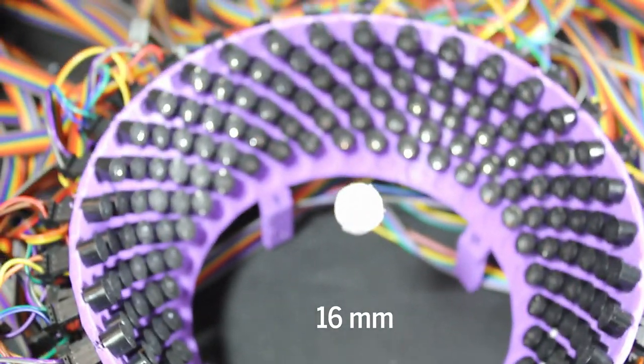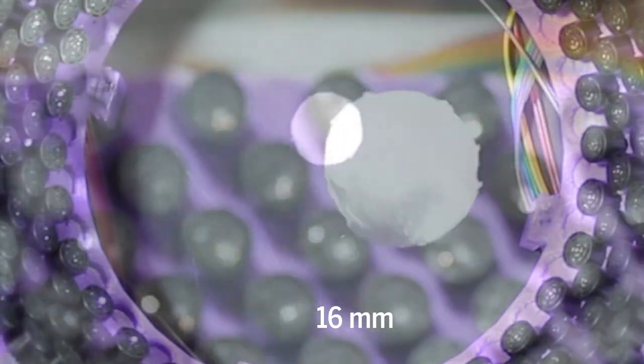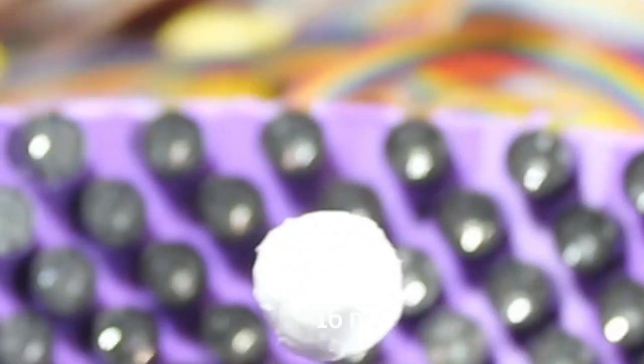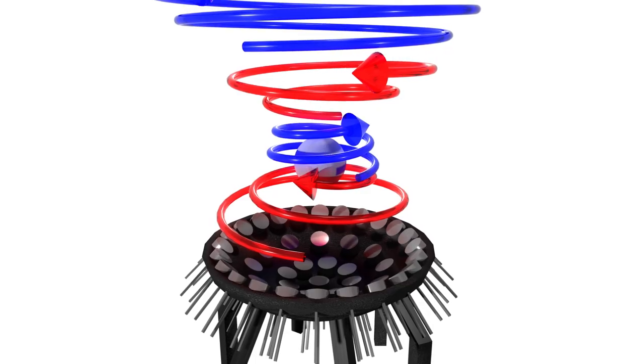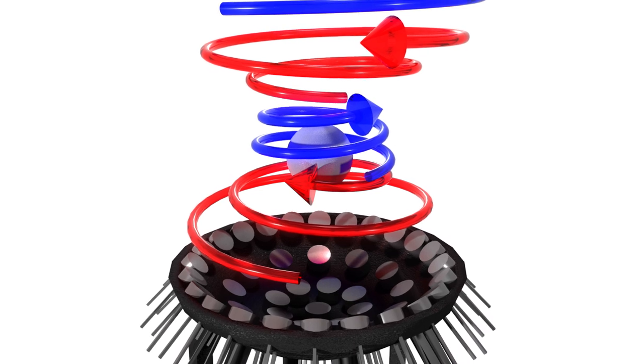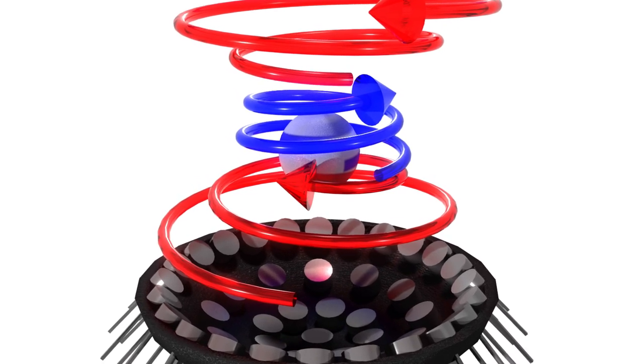Now a team of engineers has figured out how to levitate objects more than 10 times that size. Using 192 loudspeakers, they created two vortexes that pulse in alternating bursts of a few milliseconds each.